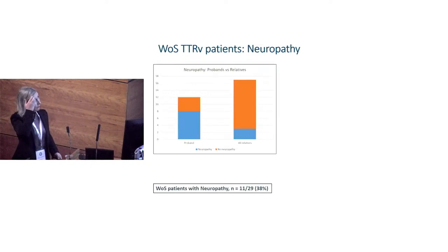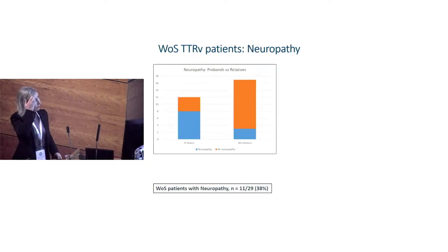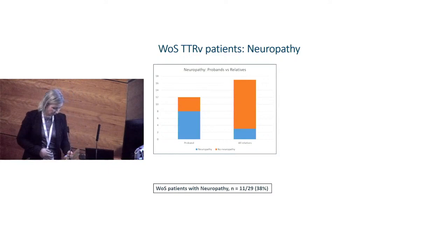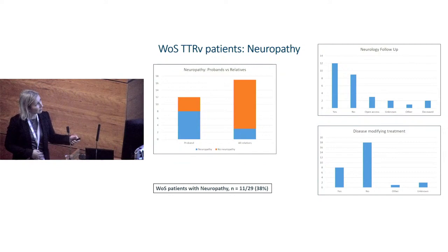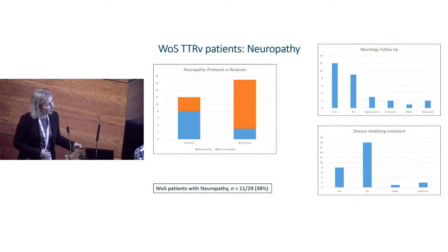Looking at the prevalence of neuropathy in our cohort, just over a third were affected. About half were continuously under neurology follow-up, some had open access, and of those, about a third were on disease-modifying treatments.